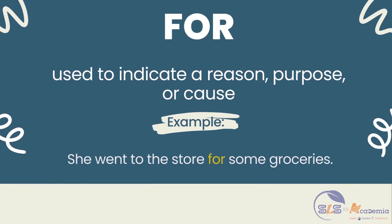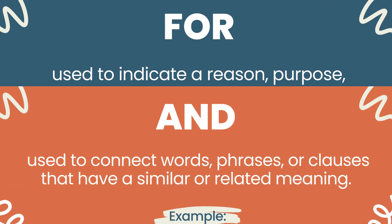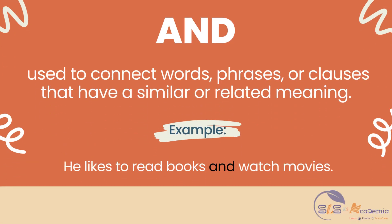"For" is used to indicate a reason, purpose, or cause. It explains why something is happening or being done. For example: she went to the store for some groceries. "And" is used to connect words, phrases, or clauses that have a similar or related meaning. It signifies addition or continuation. For example: he likes to read books and watch movies.